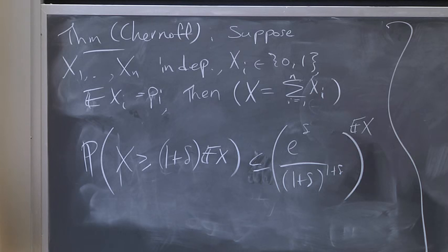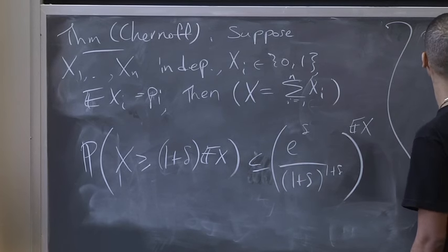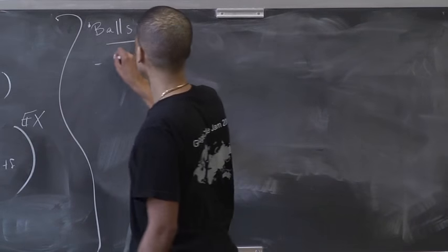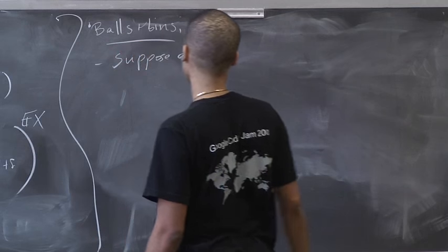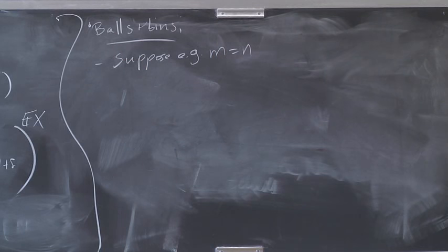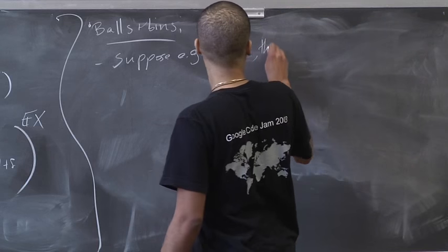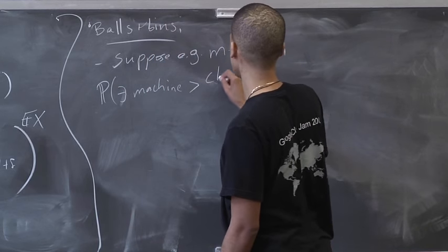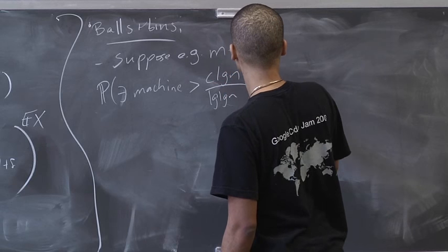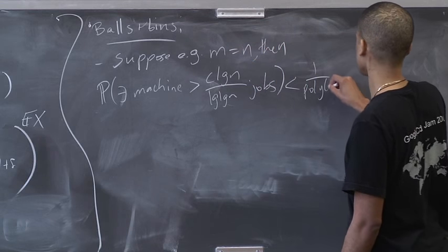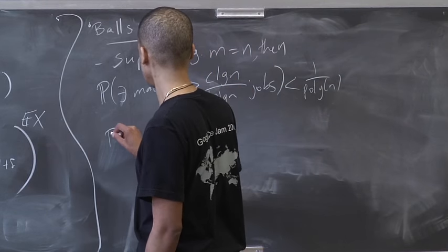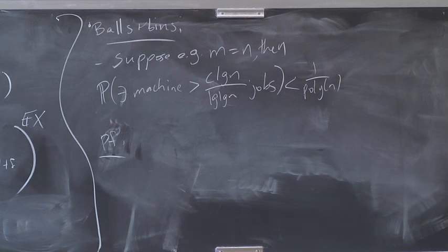The probability that X is bigger than 1 plus delta times its expectation is at most e to the delta over (1 plus delta) to the (1 plus delta) to the expectation of X. So how do we use that to analyze balls and bins? Suppose M equals N - you're servicing N jobs using N machines, so on average every machine has exactly one job.